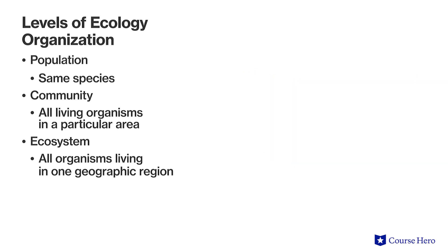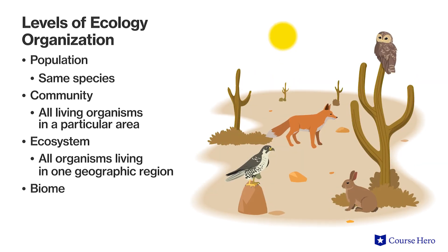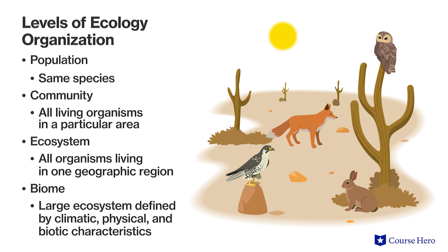The next level studied by ecologists is a biome — a large ecosystem defined by climatic, physical, and biotic characteristics. It typically includes smaller ecosystems in a wide geographic region sharing similar characteristics, usually average rainfall, average temperature, and major plant types.